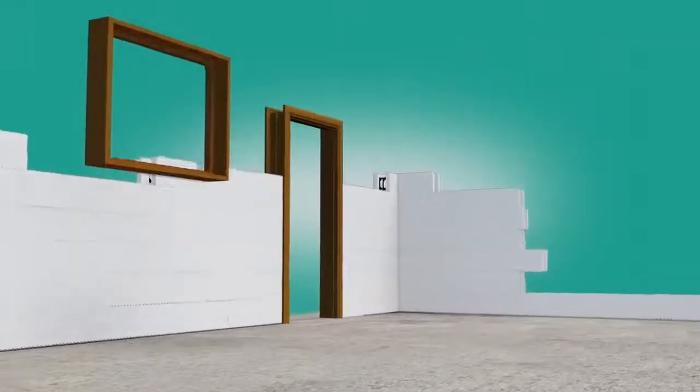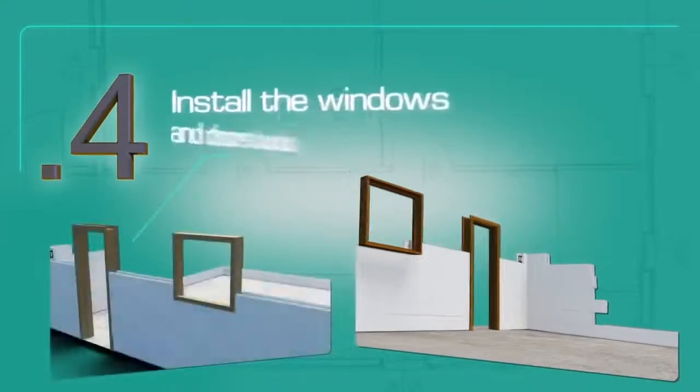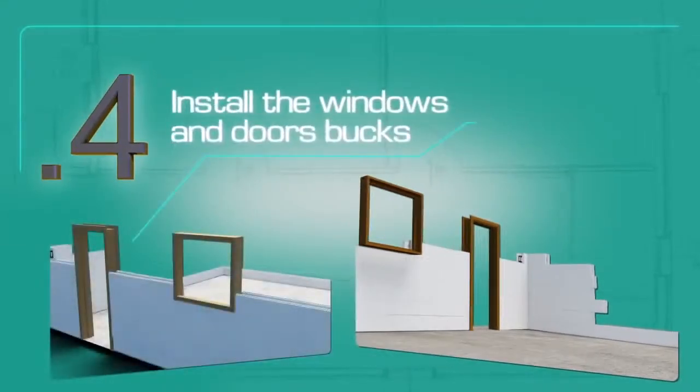Install window and door box at each location where an opening is required. Cut and fit the AMVIC blocks around them.